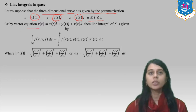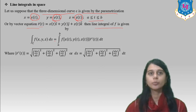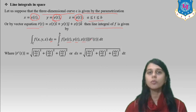The vector equation R-bar of t is x(t) i-hat, y(t) j-hat, z(t) k-hat. The line integral of f over path C — f of x, y, z ds — because it is in space we use ds. The integral from a to b, since the value of t is from a to b, gives f of x(t), y(t), z(t) times the modulus of R-bar prime of t, dt.